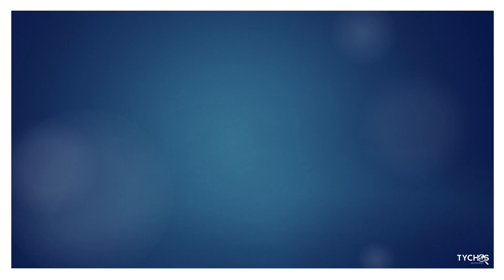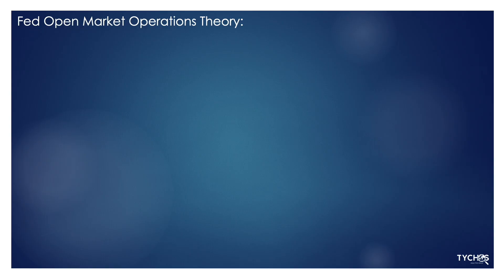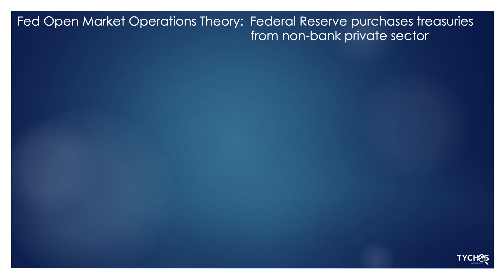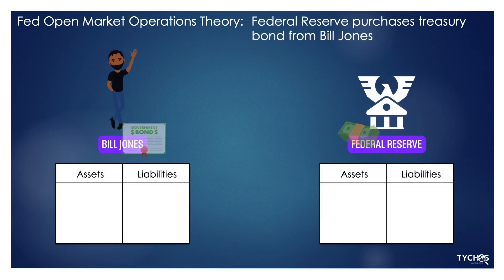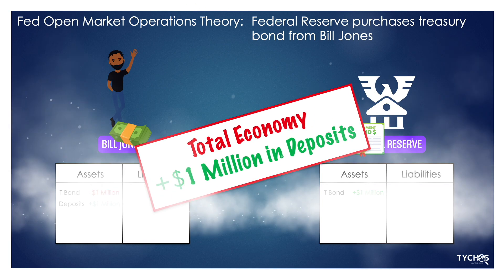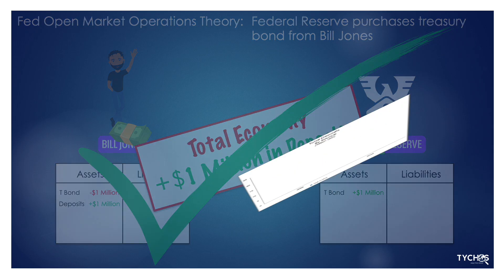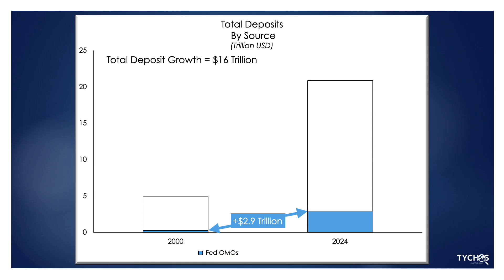Finally, some say that when the Federal Reserve buys treasury securities in the open market — called open market operations, or OMO — money is created. And bingo, they are correct. When those treasury securities are purchased from a non-bank private sector entity, such as a household or pension fund, deposits go up. But in this 24-year period, the net increase in reserves created by Fed open market operations was only $2.9 trillion. Deposits increased by $16 trillion, so Fed OMO only explains $2.9 trillion, leaving $13.1 trillion in deposit growth unexplained.